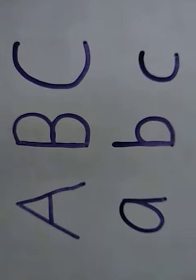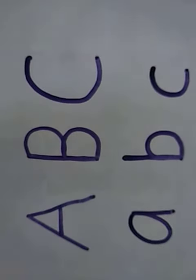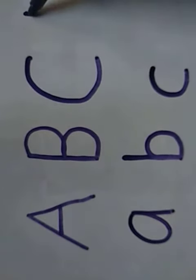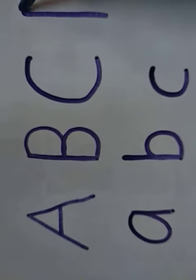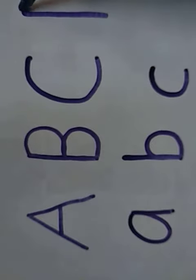C: capital C, small c. Now the letter D: standing line, go up, come down. See bump, go up, come down.